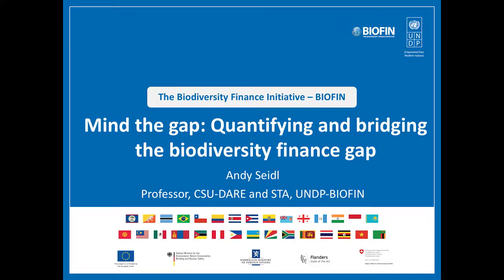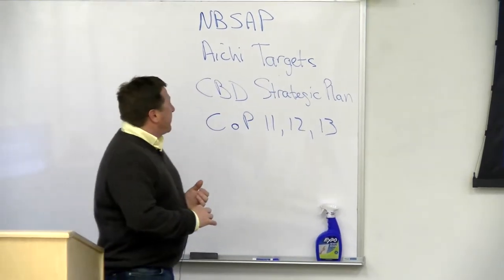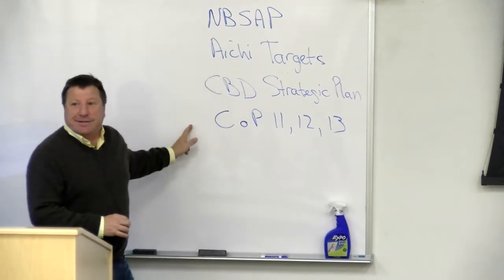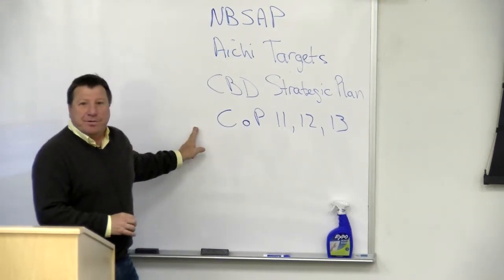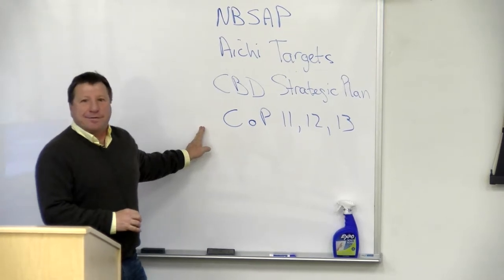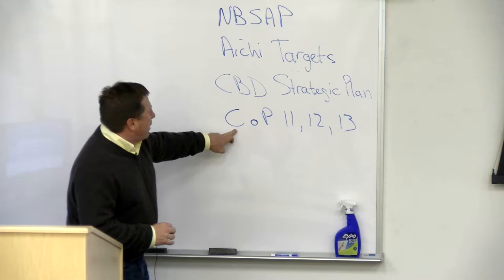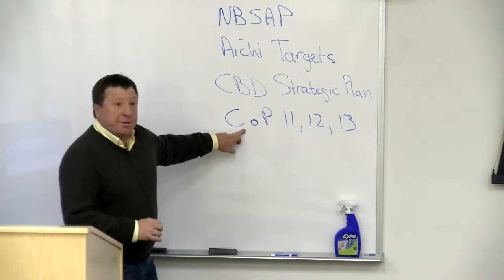So, 'Mind the Gap: Quantifying and Bridging the Biodiversity Finance Gap.' This is a UN project, so there's lots of alphabet soup. Is everybody familiar with these acronyms? Which COP? The CBD COP — 11, 12, and 13. If we were talking about the climate change COP, it would be different numbers.